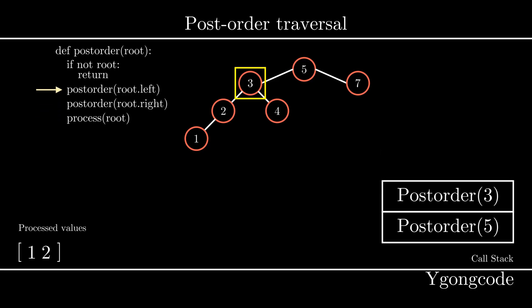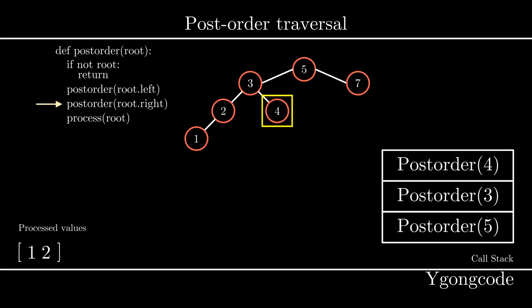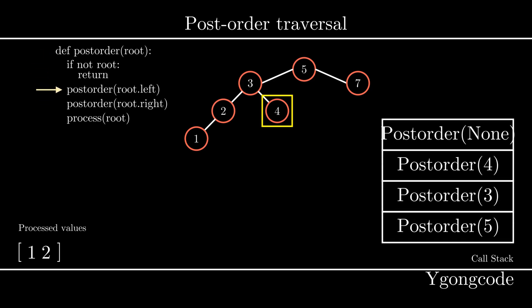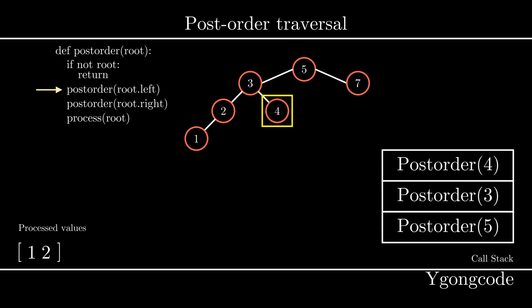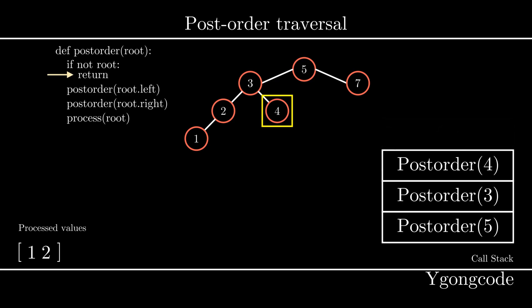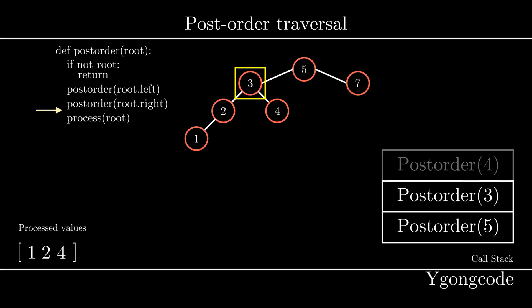At post-order(3), we exit out of the left subtree, so we traverse its right subtree, which is node 4. We push post-order(4) onto the call stack. At post-order(4), we traverse its left subtree, which is empty, so we push post-order(None) and pop it off. Then we move on to traverse the right subtree, which is also empty — we push post-order(None) and pop it off again. We go back to post-order(4) and process its value, then pop it off the stack and return to post-order(3).